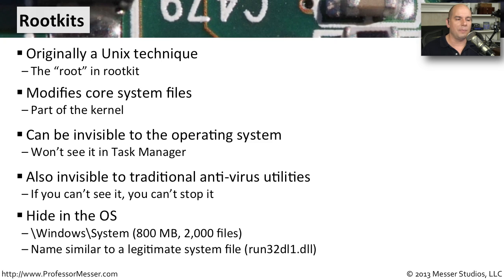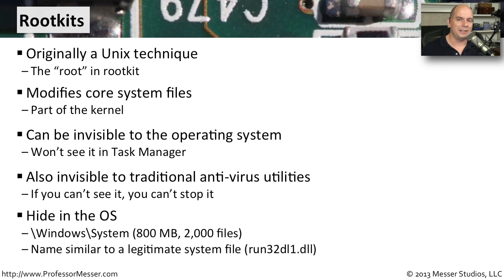Hiding in the operating system is very common, whether integrated into the kernel or hiding in plain sight. For instance, if you look at your Windows system folder, it's about 800 megabytes and 2,000 files. If someone simply adds another file into that directory, are you even going to notice? There's so much information in there, and if it's given an odd name like run32dl1.dll, you might even miss it when listing through the files.